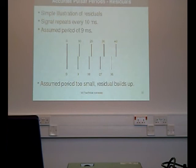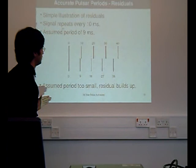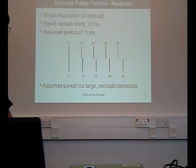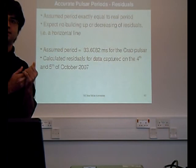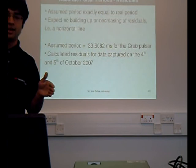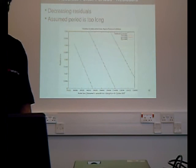And the easiest way to explain the residuals is this. If you have a signal every 10 milliseconds, and you think it's 9, approximate period, you have 1 here missing, and then 2, 3. So the residual builds up. And vice versa. If you have an assumed period that is too large, the residual will decrease, because here you have 9, 8, 7, decreasing. So, if your assumed period is exactly equal to the real period, then you would expect no buildup or decreasing, so you would expect a flat line, a horizontal line. And I assumed the period of 33.608 milliseconds for the crab pulsar, given by Christine.